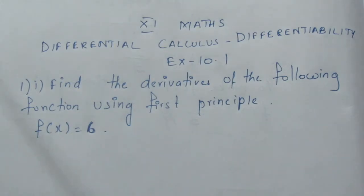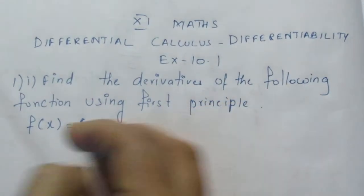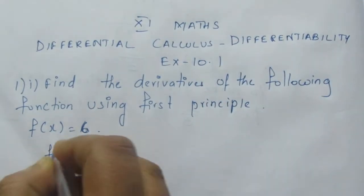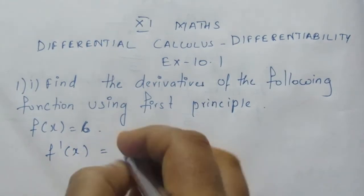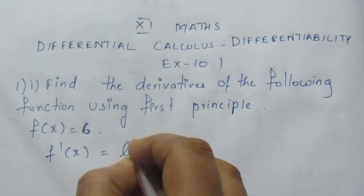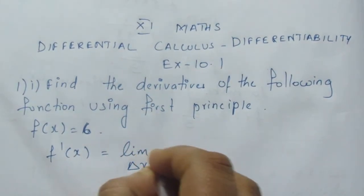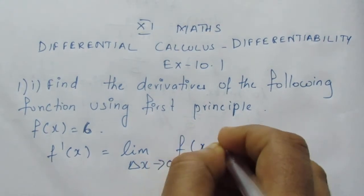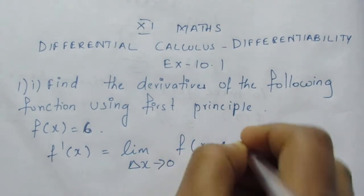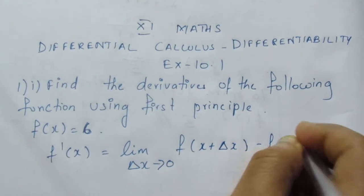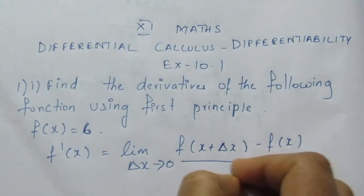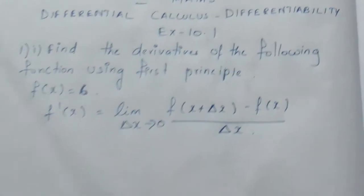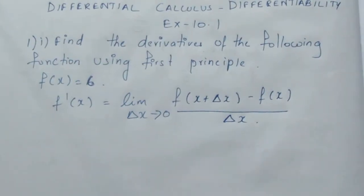This is the first principle formula — how can we do it? If you say f of x, the differentiation, you can say f'(x), which is equal to limit delta x tends to 0, f of x plus delta x minus f of x, divided by delta x. This is the first principle formula.